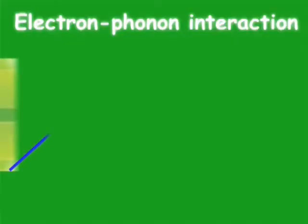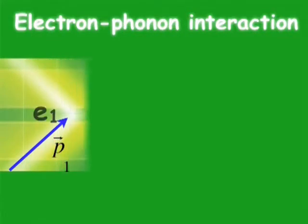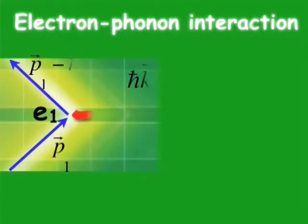So one electron generates phonon and continues its life. So p1, it is the initial momentum, then p1 minus ℏk, it is the final momentum of the first electron.